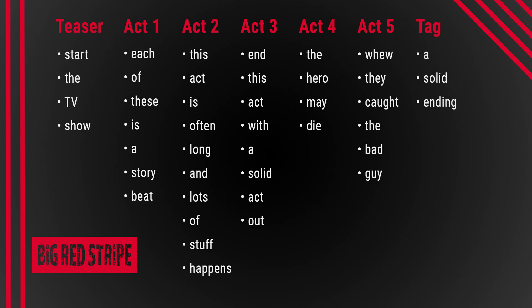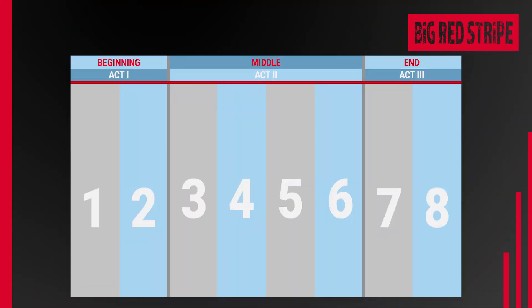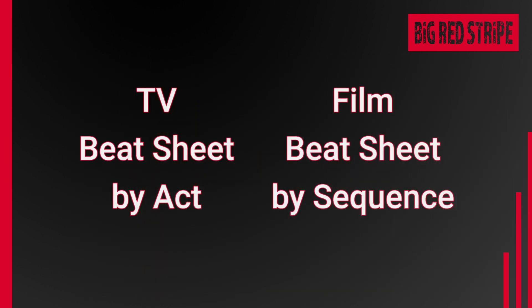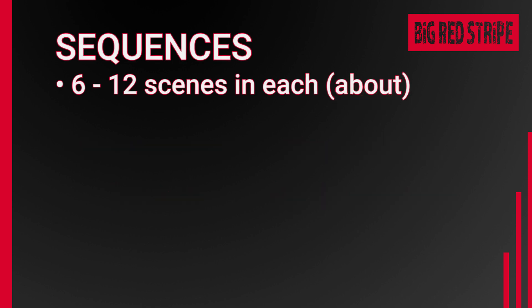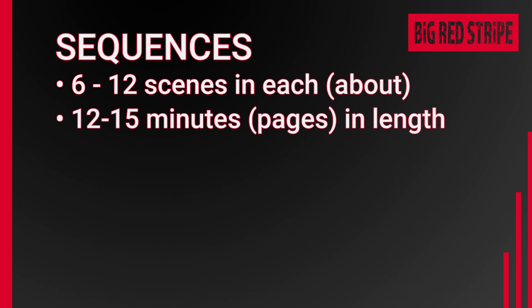To know where you're going, you create a beat sheet with all the story beats and character beats in one brief outline. You can also do this for feature films. In films, because there are no commercials, you break them down into sequences, which are actually structural elements within a screenplay. Sequences typically consist of 6 to 12 scenes each, and they are often between 12 to 15 minutes long.